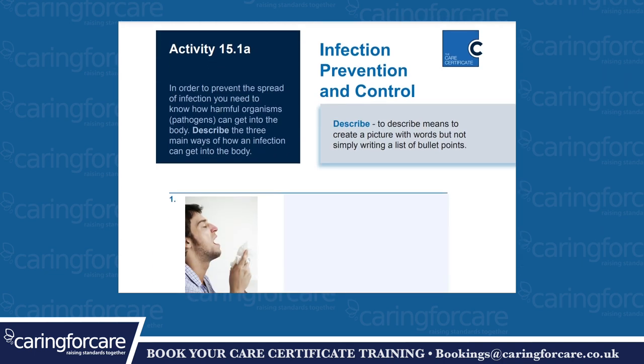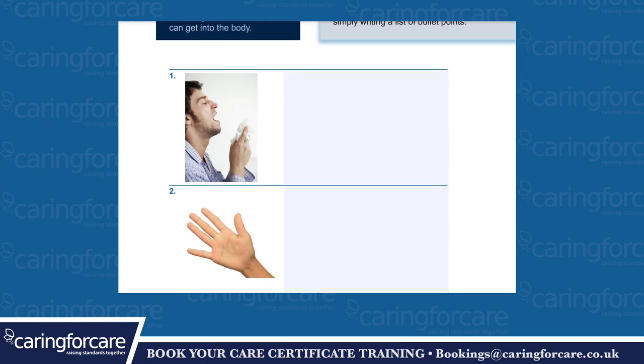Activity 15.1a. In order to prevent the spread of infection, you need to know how harmful organisms — pathogens — can get onto the body. Describe three main ways of how infection can get onto the body. To describe means to create a picture with words, but not simply writing a list of bullet points.